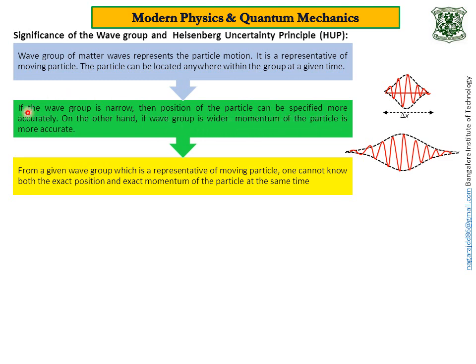Coming to the next point: if the wave group is wider, the momentum of the particle is more accurate. Position measurement is not accurate, but you can measure the wavelength of the particle with more accuracy. That means lambda can be measured accurately. Since lambda equals h divided by p, where p is momentum, if lambda is accurate then p is also accurate. So a wider wave group gives a more accurate momentum value.